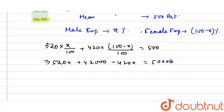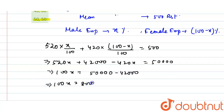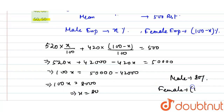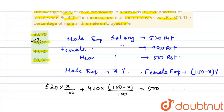That means 520x plus 42000 minus 420x equals 50000. So we get 100x equals 8000, therefore x equals 80. So male is 80 percent and female is 100 minus 80 equals 20 percent. Therefore the second option, 80 comma 20, is the correct answer.